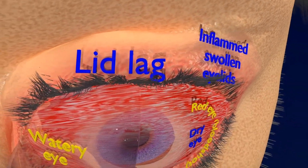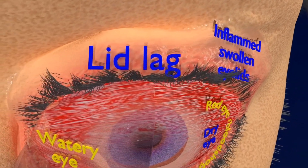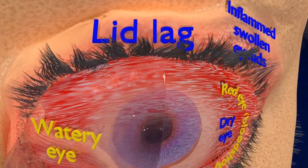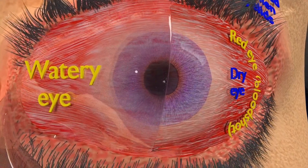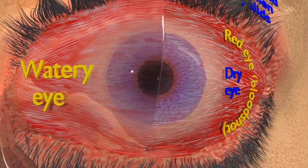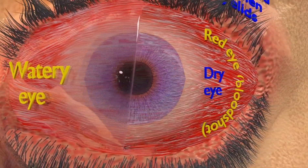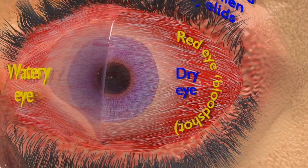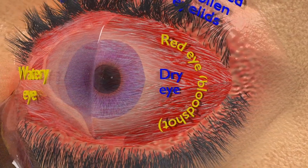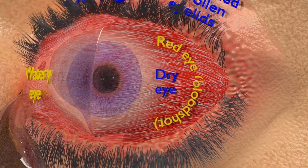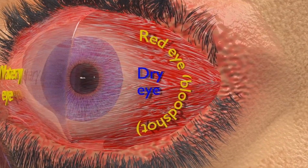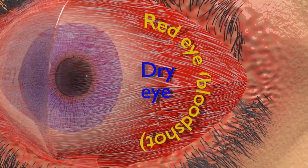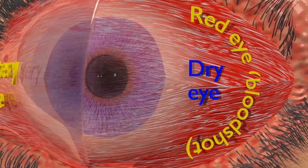Ophthalmopathy is reported to occur in nearly half of the patients with Graves' disease, that is, hyperthyroidism — an increase in thyroid hormone levels in blood — and in 2% of patients with Hashimoto's thyroiditis.